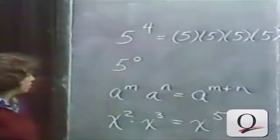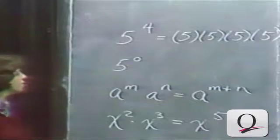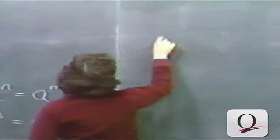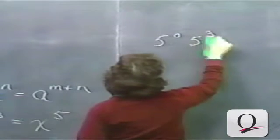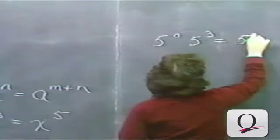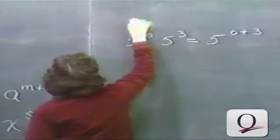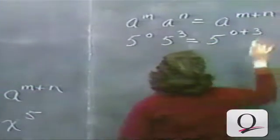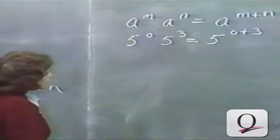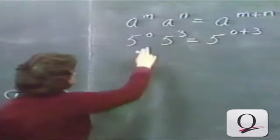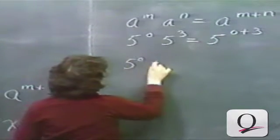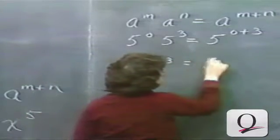Whatever meaning we're going to give to 5 to the 0 should be consistent with this rule. 5 to the 0 times 5 to the 3 should be 5 to the 0 plus 3, if the rule a to the m times a to the n equals a to the m plus n is going to hold true for zero exponents as well. So 5 to the 0 times 5 to the 3 should be equal to 5 to the 3.